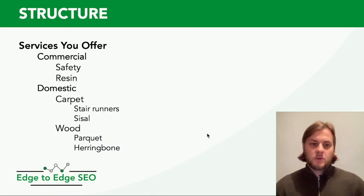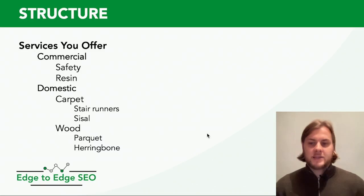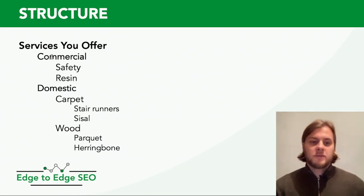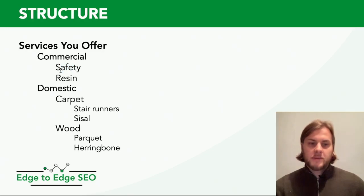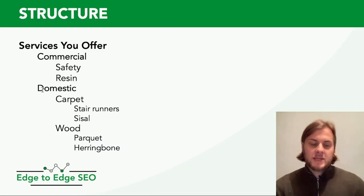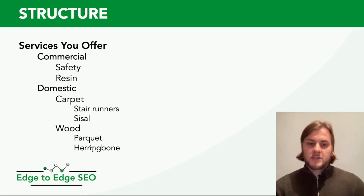Let's talk about how to structure the services you offer. Think about how they relate to your main overall site concept. For example, if you offer commercial services, that would be a tier-two piece of content. Within commercial you might offer safety flooring and resin flooring as tier three. Domestic would be tier two, carpets tier three, and stair runners tier four. You can do the same with wood.